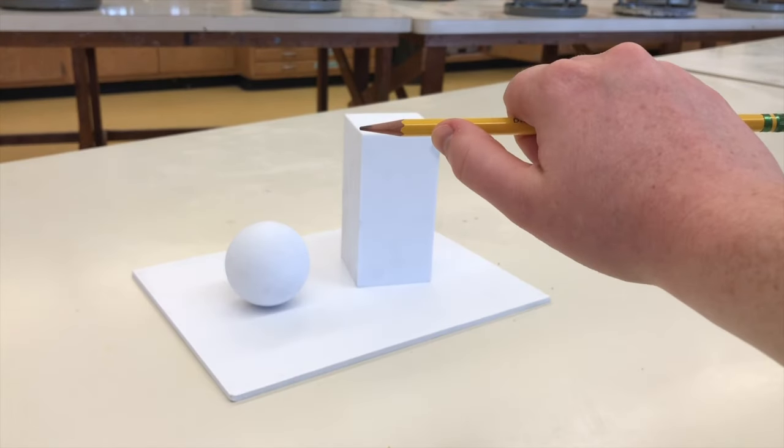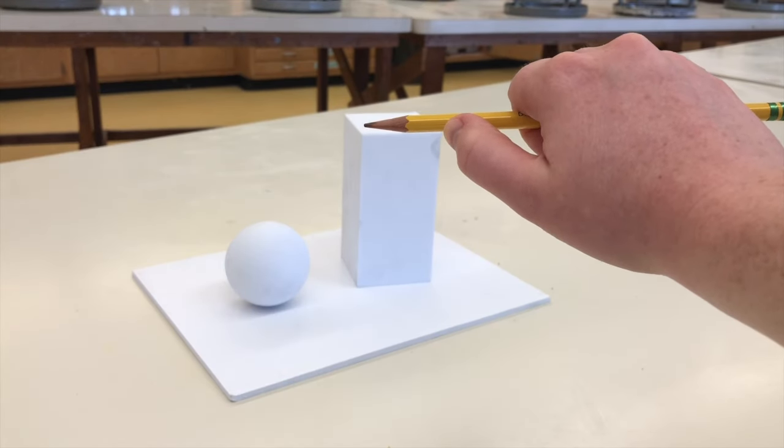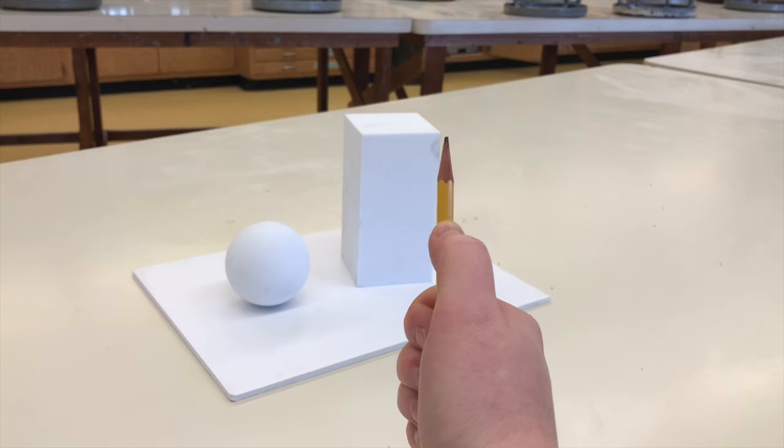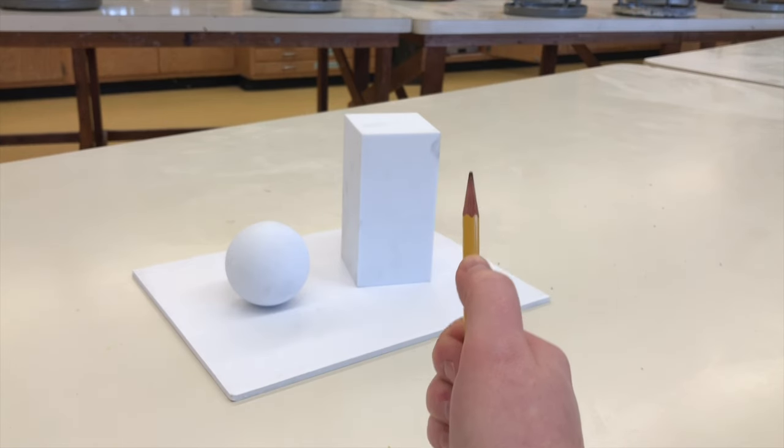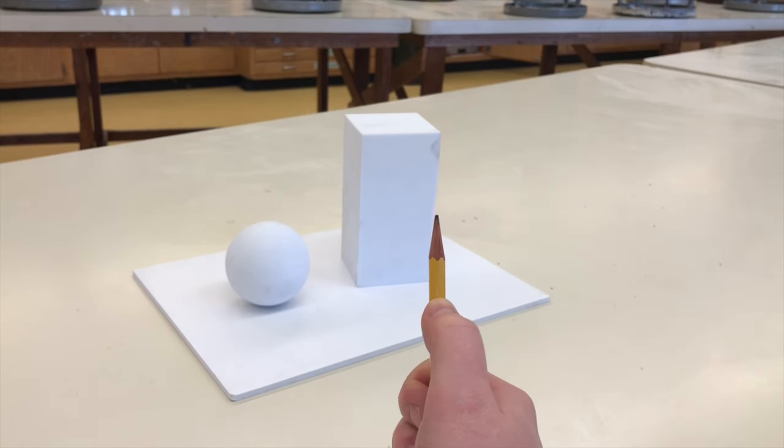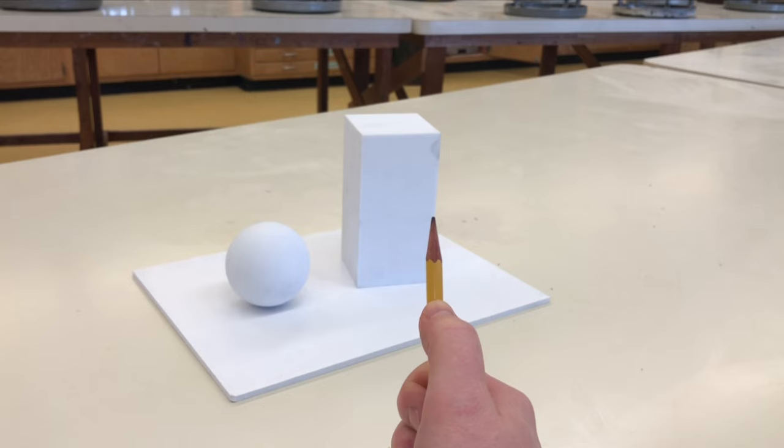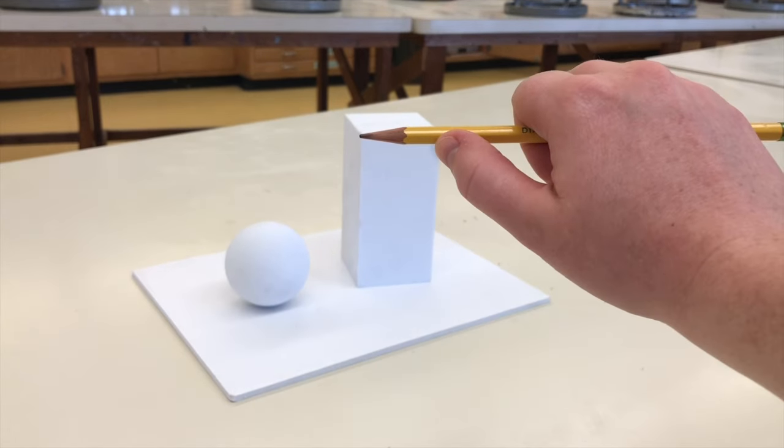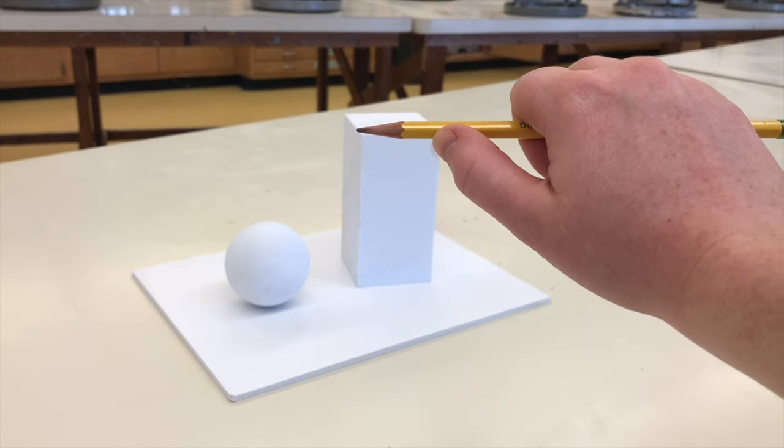By figuring out the width of the rectangular prism, I now can see how many lengths it takes in order to find the height, and it's a little under 2. Always look at the relationship between one shape to the next in order to figure out the proportions.